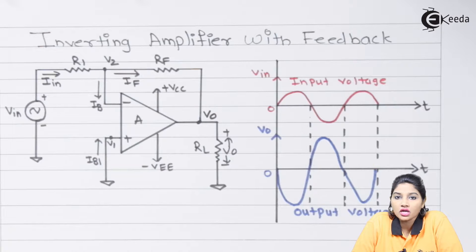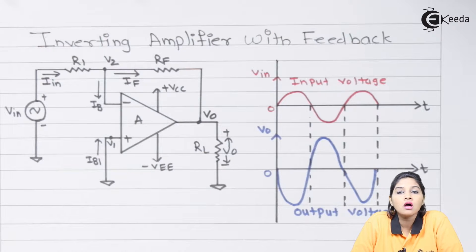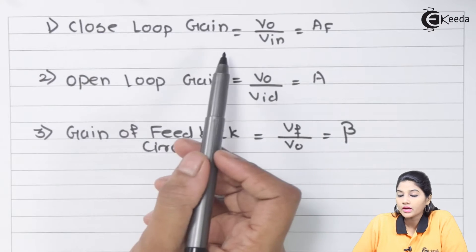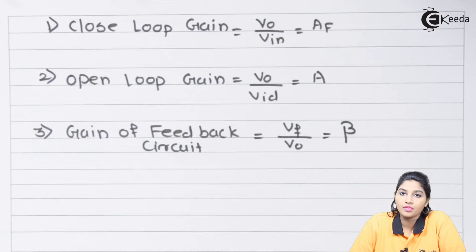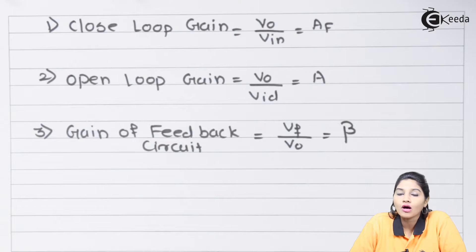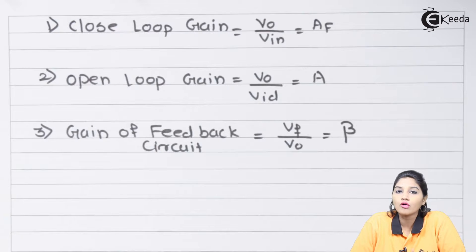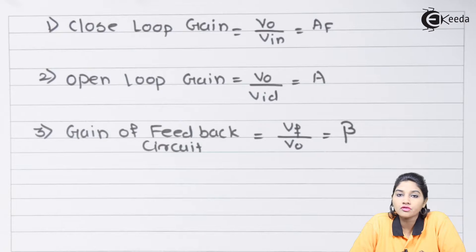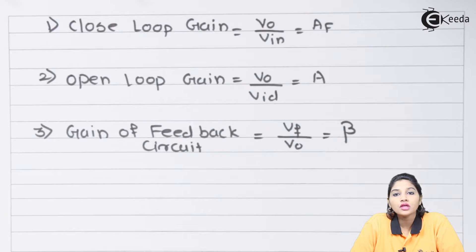Before deriving the expression for voltage gain of the closed loop amplifier, it is important to understand a few terms: closed loop gain, open loop gain, and gain of the feedback circuit. The closed loop gain is denoted by A_f and is the ratio of output voltage to input voltage. The open loop gain is denoted by A and is the ratio of output voltage to the differential voltage V_id.